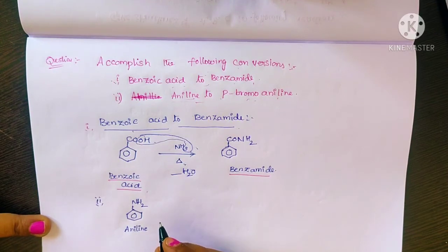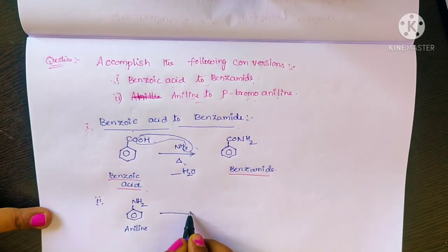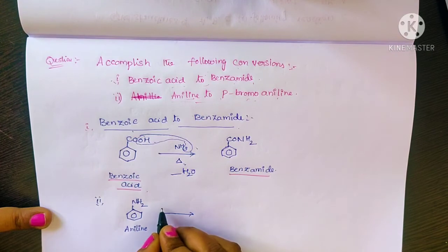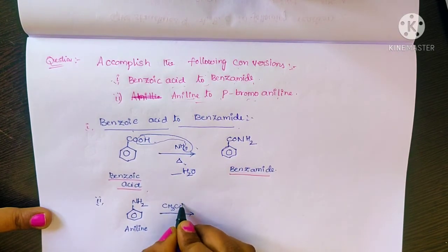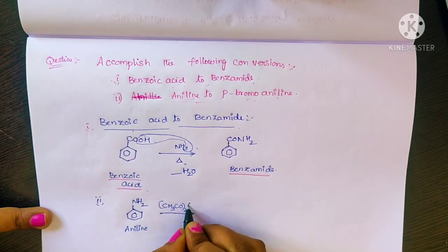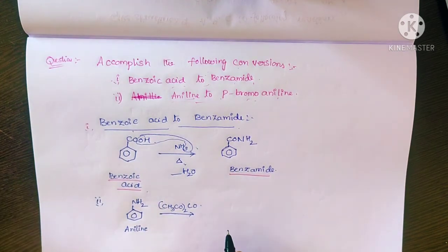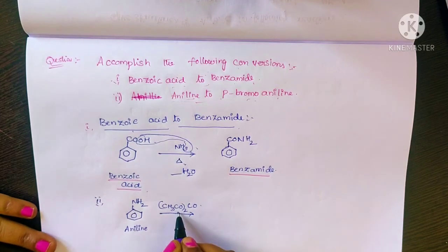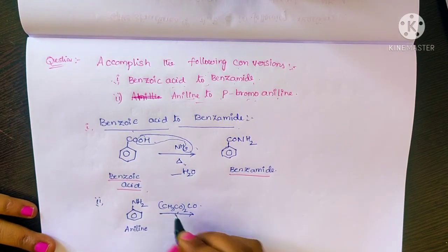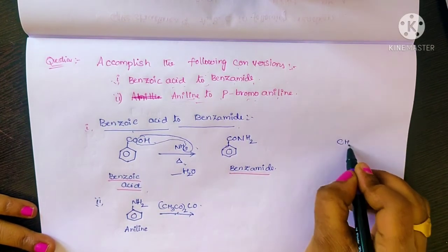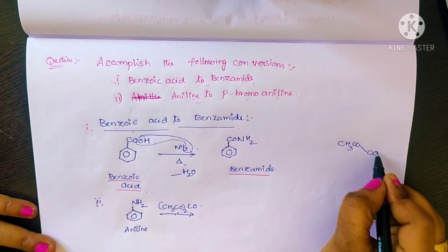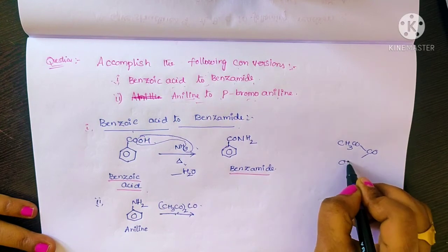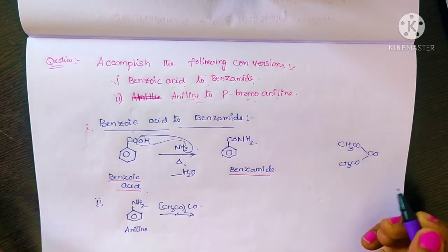The benzene ring carrying NH2 — this is aniline. It reacts with (CH3CO)2O, that is acetic anhydride. Why do we use acetic anhydride? Acetic anhydride is a reagent used for acetylation. The process is named acetylation.